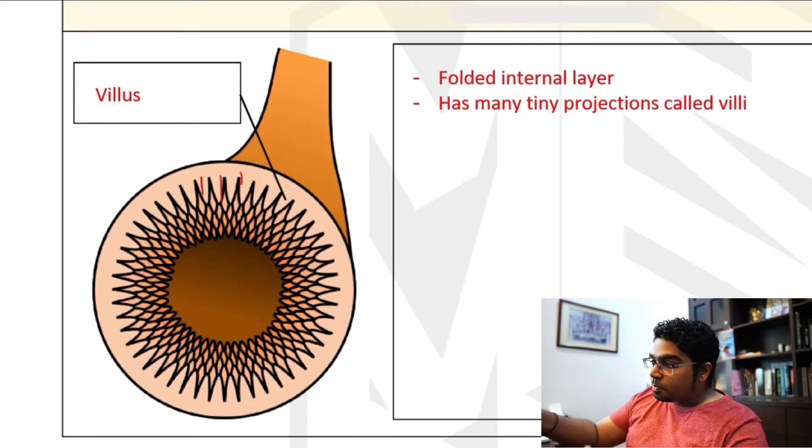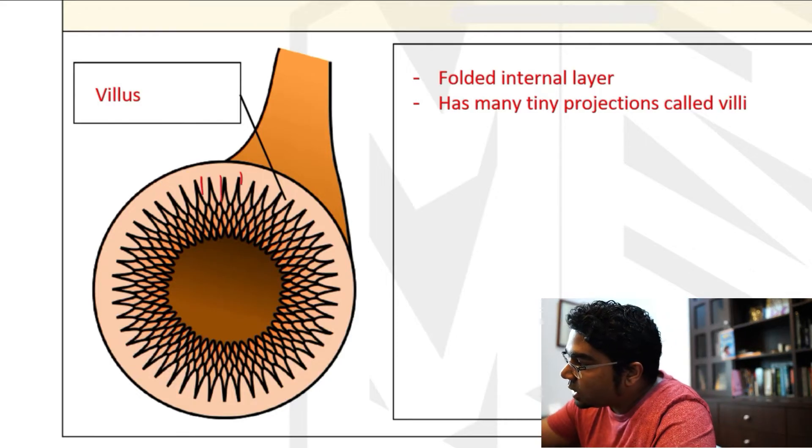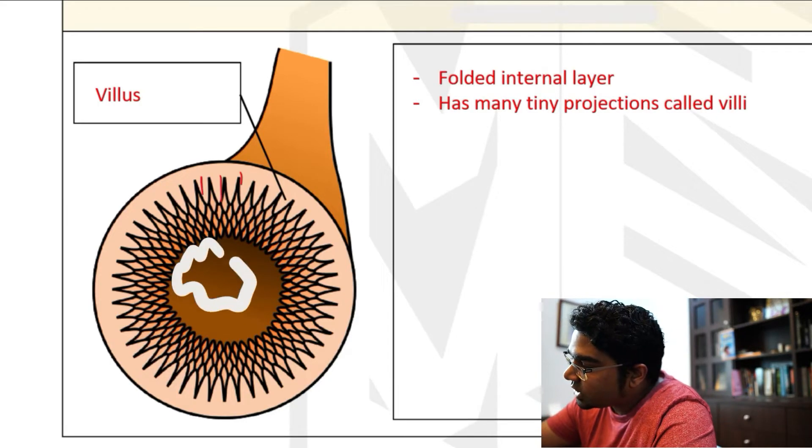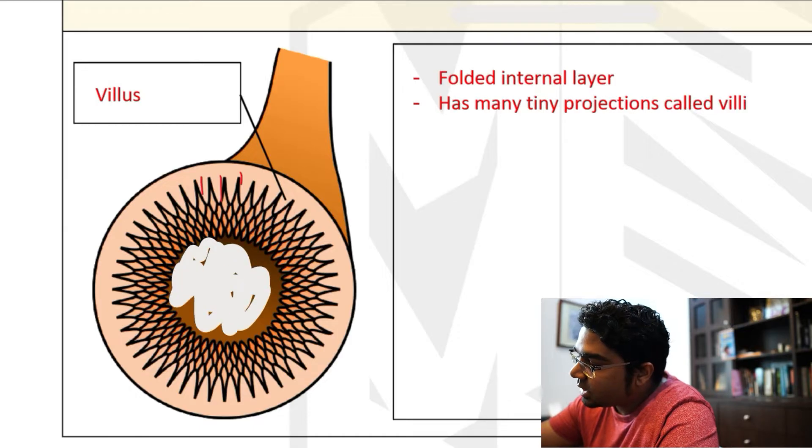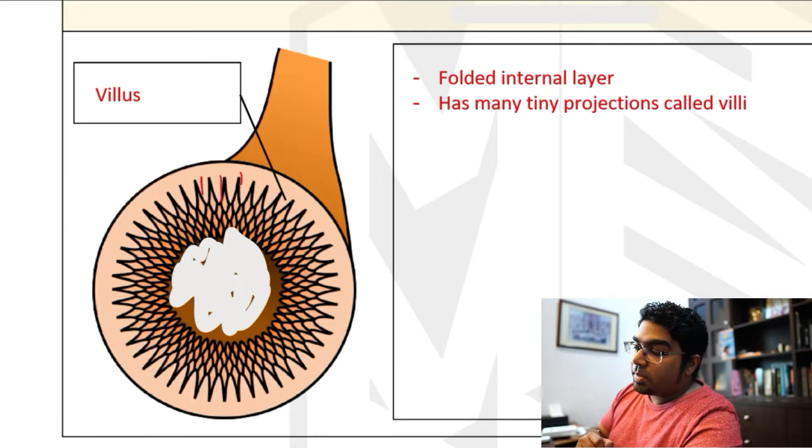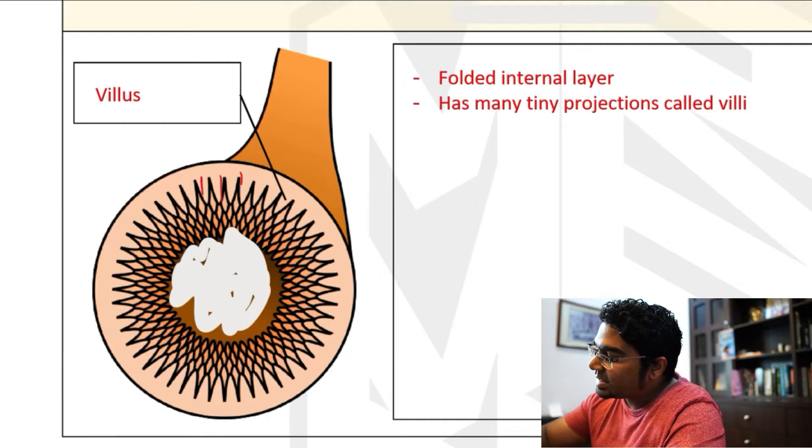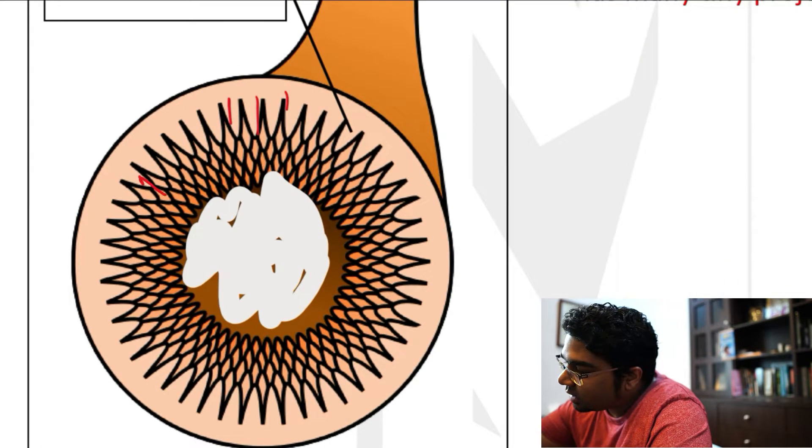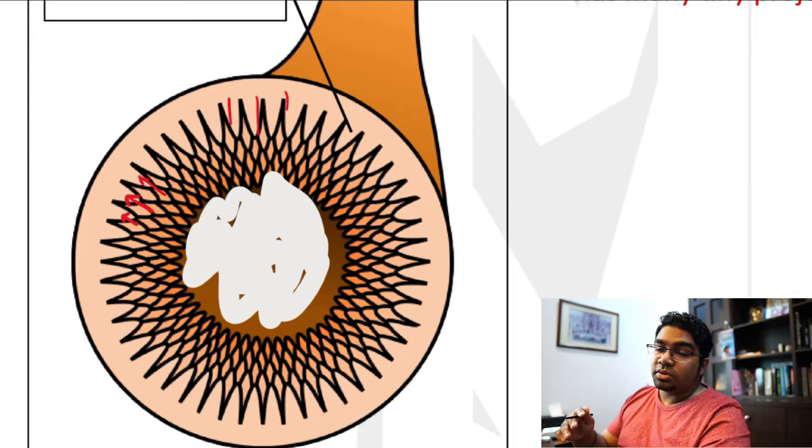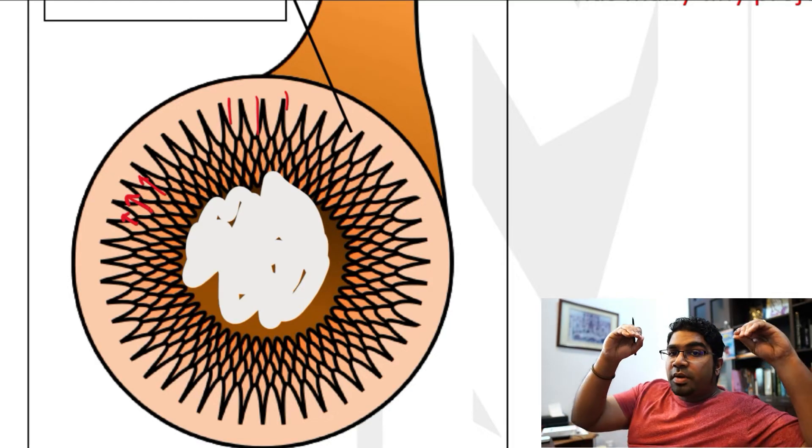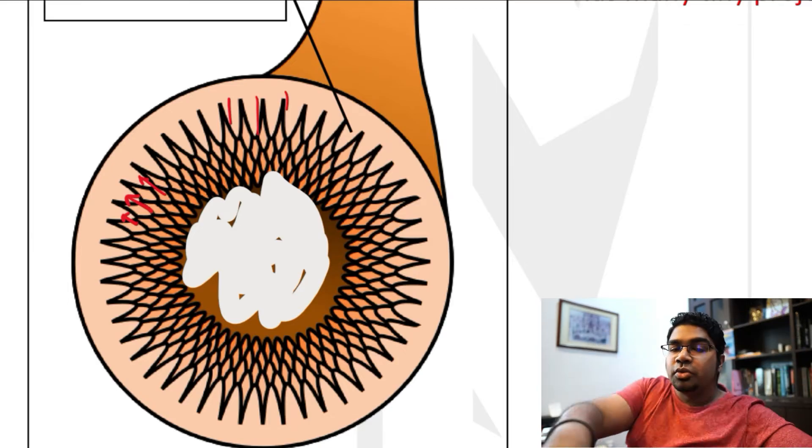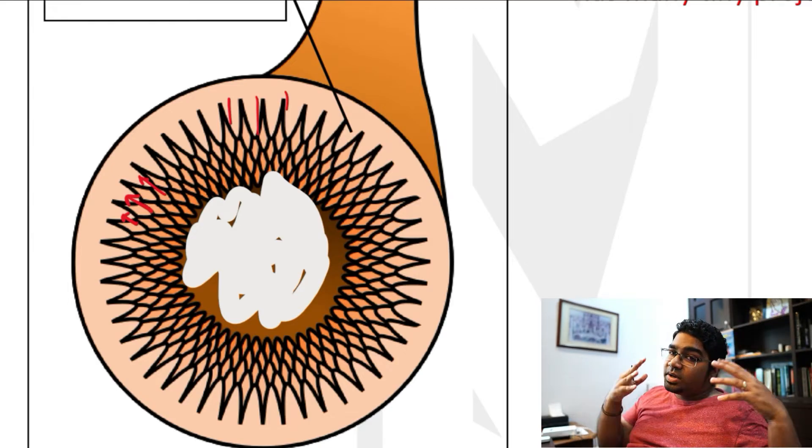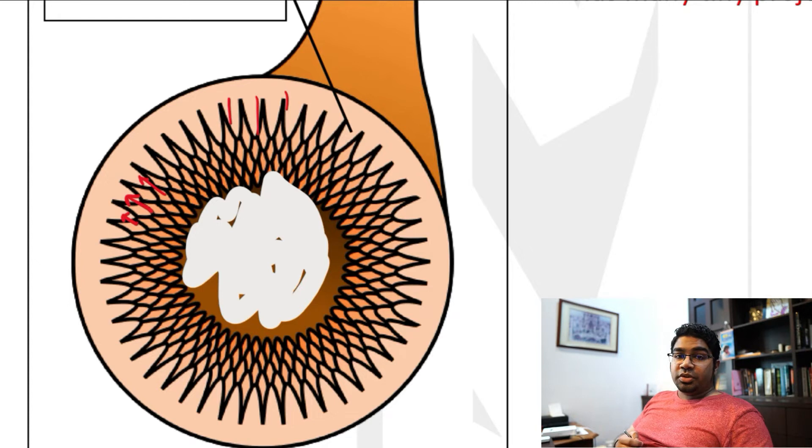And why would we want to do that in this case? We have to remember that all the nutrients that are digested is inside the ileum here, in the lumen. So we want to increase the surface area so that there's more room for nutrients to pass through. This increases the efficiency of absorption of nutrients.